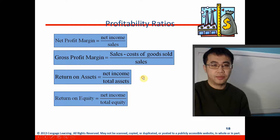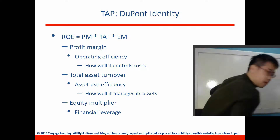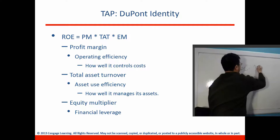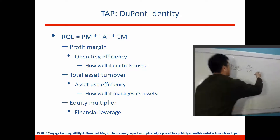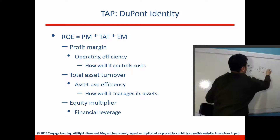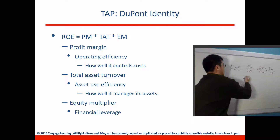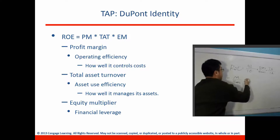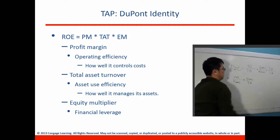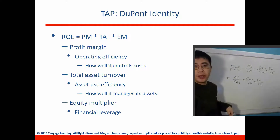Now, how do we construct return on equity using the DuPont Identity method? Return on equity is net income divided by total equity. In the DuPont framework, we multiply by sales over sales and total assets over total assets — both equal to one — without changing the value. Rearranging: net income divided by sales gives profit margin, sales divided by total assets gives asset turnover ratio, and total assets divided by total equity gives the equity multiplier.